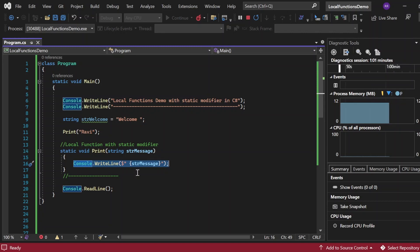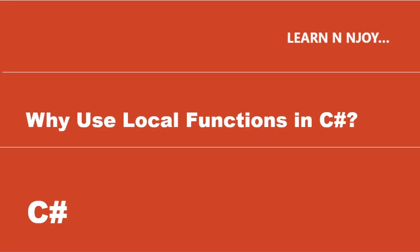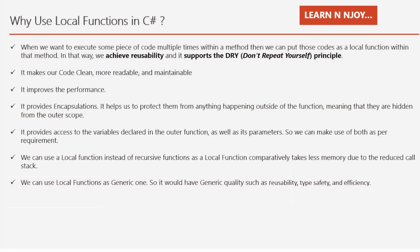Why use local functions in C#? There are various benefits associated with local functions in C#. Here we'll go through some compelling reasons. Number one: when we want to execute some piece of code multiple times within a method, we can put those as a local function within that method. In that way we achieve reusability and it supports the DRY (Don't Repeat Yourself) principle. Number two: it makes our code clean, more readable, and maintainable. Number three: it improves the performance.